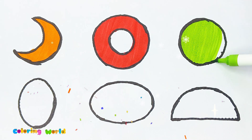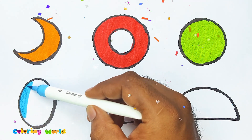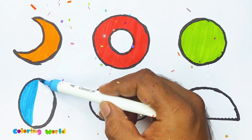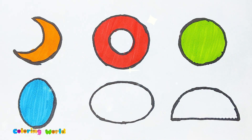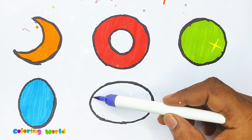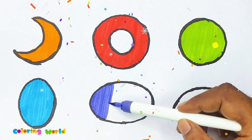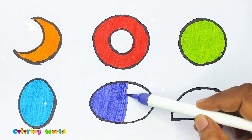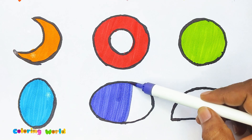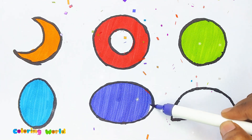A Tisket. Oval Shape. Ellipse ellipse shape. Oval. Oval shape.